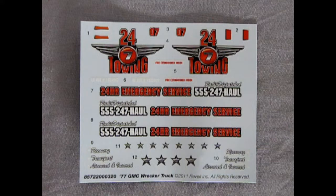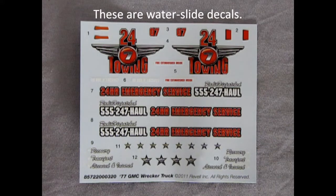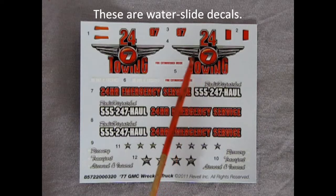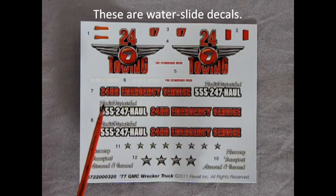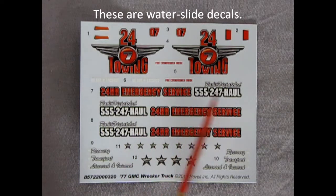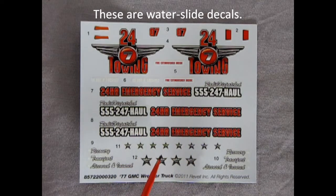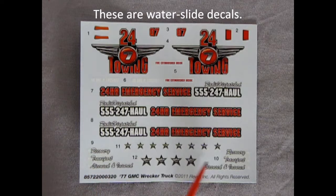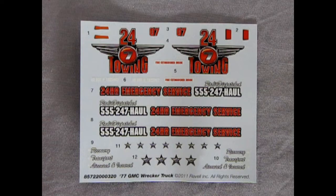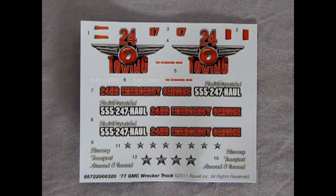Finally here are the decals for our tow truck. As you can see we've got the 24-7 towing symbol on the side. You got the 07 number here, and then our 24-hour emergency services number and our phone number for our tow truck. And again all these cool little stars and different names and other scripts on the side. So again a very cool looking decal sheet which will really dress up this model.